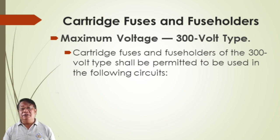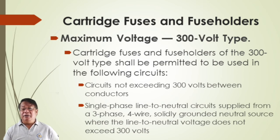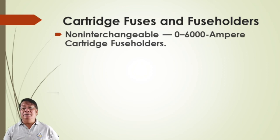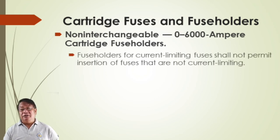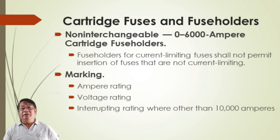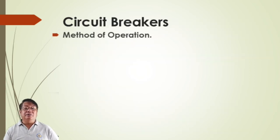For cartridge fuses and fuse holders of the 300-volt type: shall be permitted for circuits not exceeding 300 volts between conductors, and single-phase line-to-neutral circuits supplied from three-phase three-wire solidly grounded systems. Non-interchangeable 0 to 6,000 ampere cartridge fuse holders for current-limiting fuses shall not permit insertion of fuses that are not current limiting. Markings required: ampere rating, voltage rating, interrupting rating other than 10,000 amperes, whether current-limiting applies, and the name or trademark of the manufacturer.